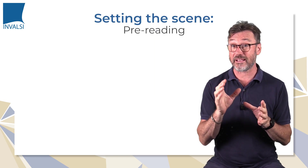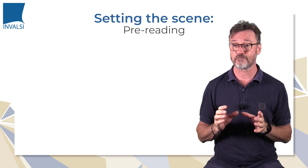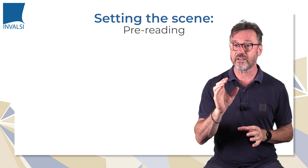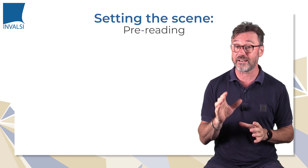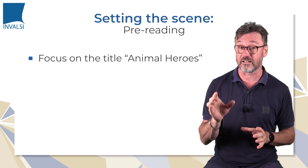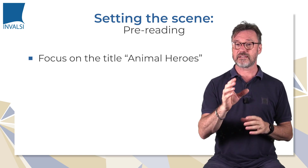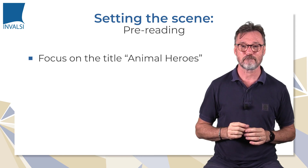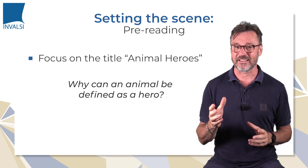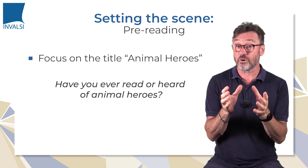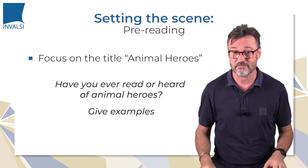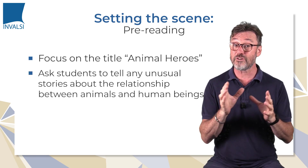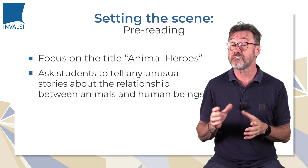In order to activate the students' expectations about the topic of the reading passage, we're going to set up a couple of quick pre-reading speaking activities. First, we're going to lead the class towards the contents of the reading activity by focusing their attention on the title Animal Heroes and asking them to come up with a definition of hero as related to an animal. Why can an animal be defined as a hero? Have you ever heard or read of animal heroes? Give examples. We then ask the students to tell any unusual stories about the relationship between animals and human beings they may have heard of.